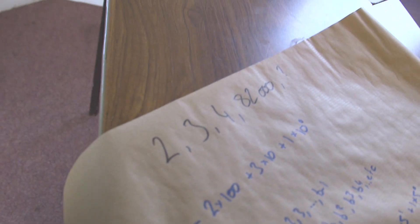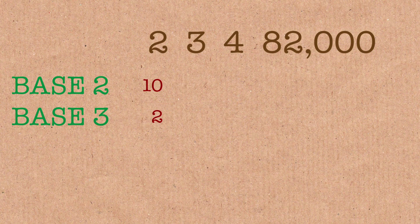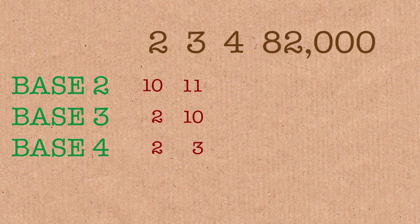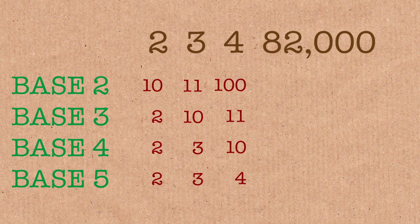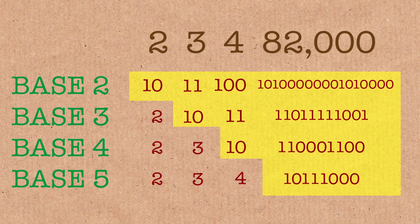Why is this a sequence? Because if we were only talking about base 2, the smallest number you could write using 1s and 0s — without being 1 itself, which is too easy — is the number 2. In base 2 it's written as 1, 0. The smallest number you can write using base 2 and base 3 in 1s and 0s only is 3. Adding base 4, the smallest is 4. Adding base 5, the smallest number you can do that with is 82,000. So it's pottering along nicely, and then suddenly — boom — 82,000.